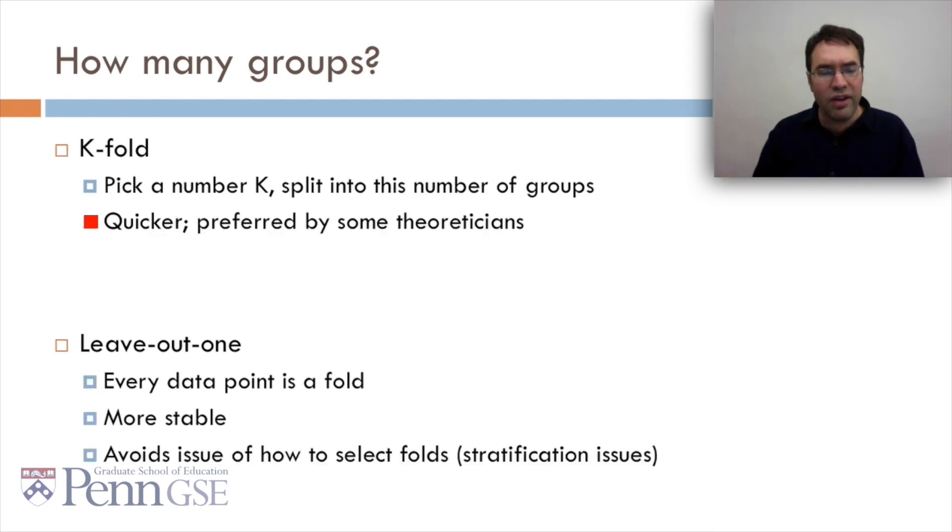Which one's better? K-fold is quicker, and is preferred by some theoreticians. Leave-out one is more stable, and it avoids the issue of how to select folds, which leads to stratification issues, which I'll talk about in a minute. The big thing is that when you use leave-out one, you don't have to think about how you select your folds. But when you use k-fold, you really do, and different choices in how you select your folds can have big differences in terms of goodness.